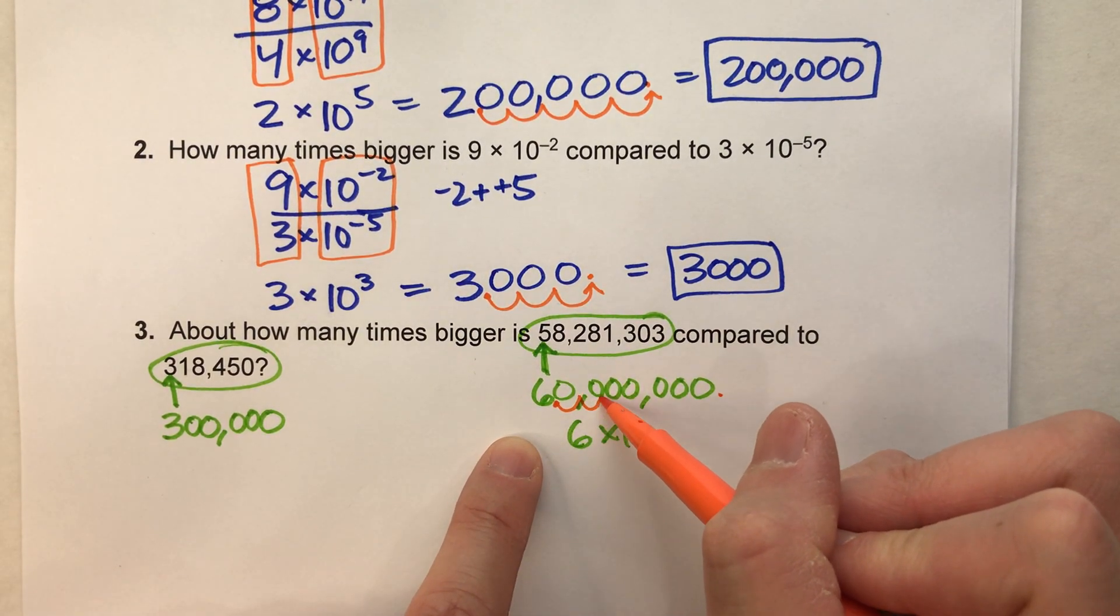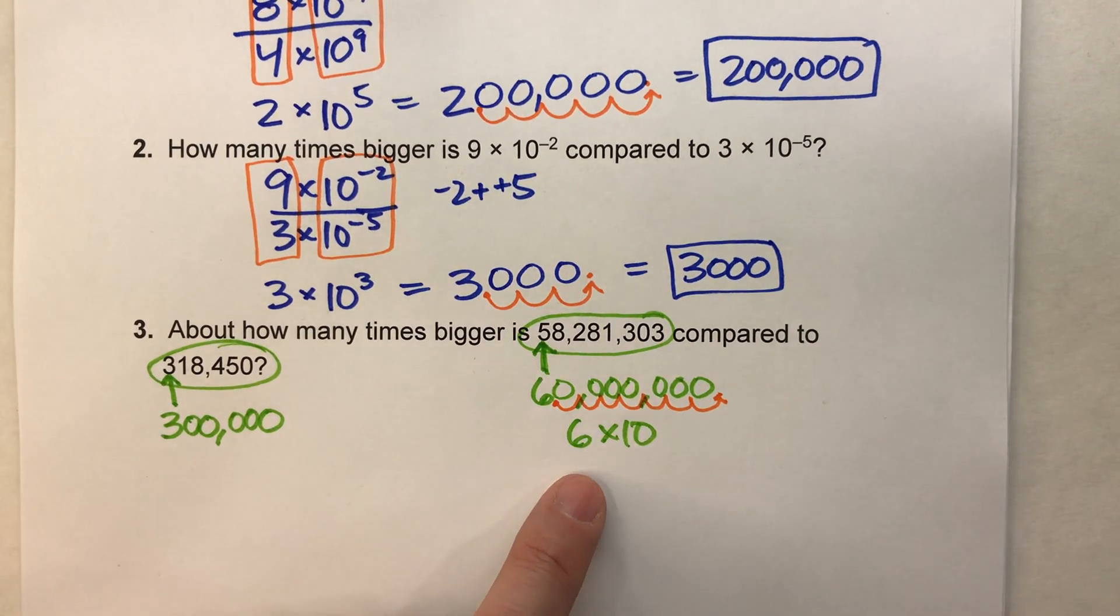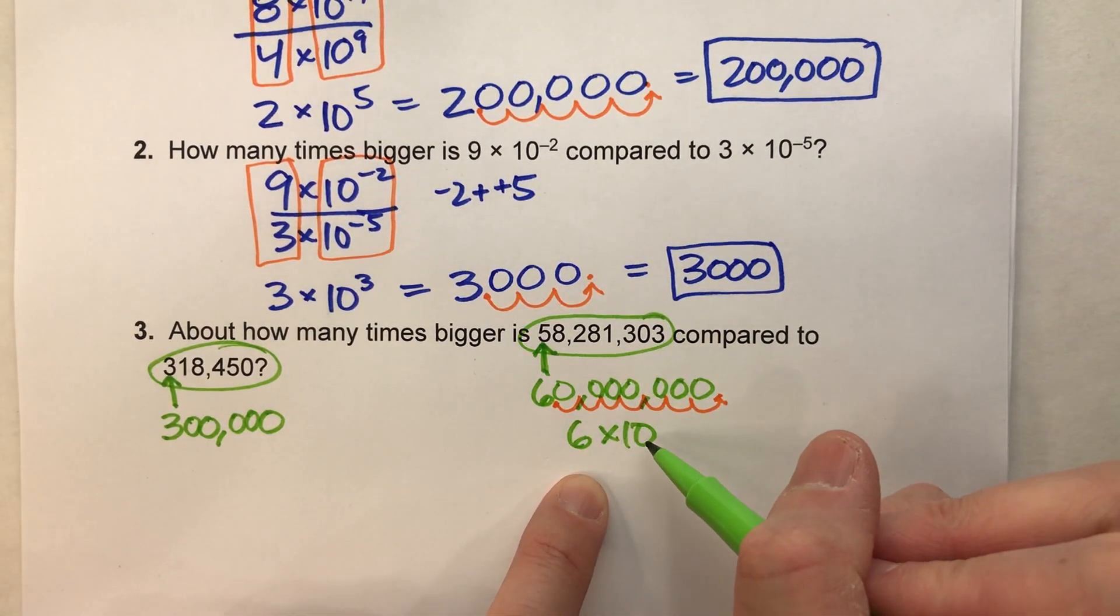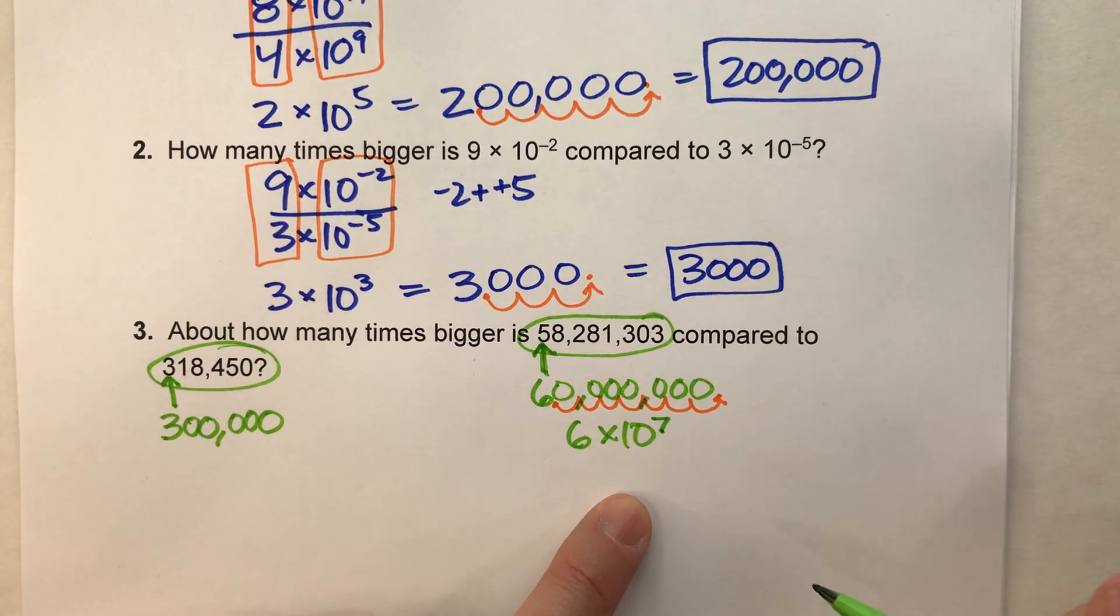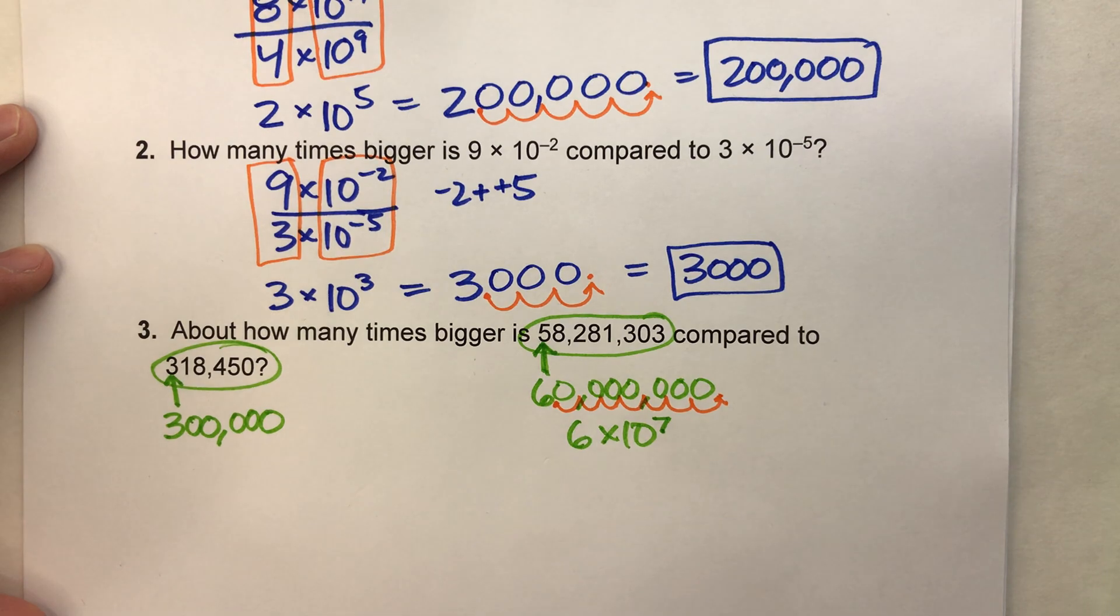So we've got to move that decimal one, two, three, four, five, six, seven times. So that tells me we need to multiply it times 10 to the seventh power, because we're moving that decimal point over seven times.